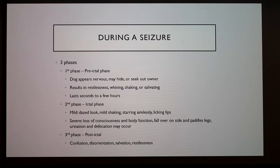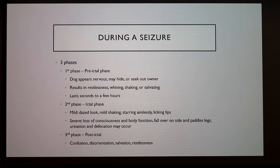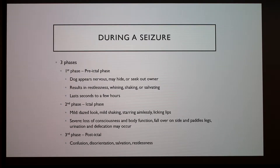During a seizure, there are three phases. The first phase is the pre-ictal phase, where the dog appears nervous and may hide or seek out their owner, resulting in restlessness, whining, shaking, or salivating. It can last seconds to a few hours. With my dog, when we realize he's having a seizure, he'll crouch really low to the ground and start walking as if he was crawling. He'll start to seek us out but mainly just run into things.